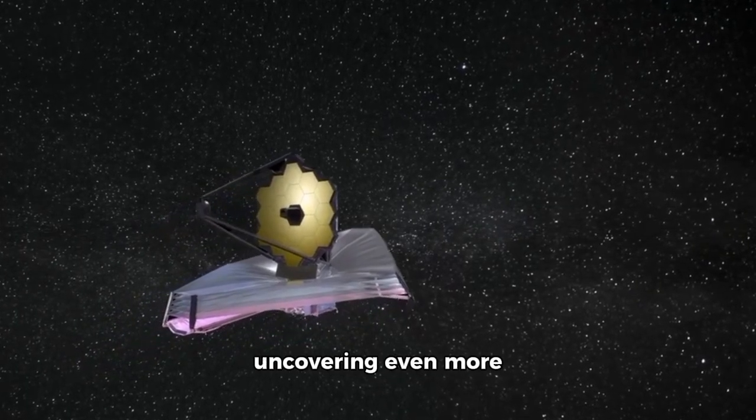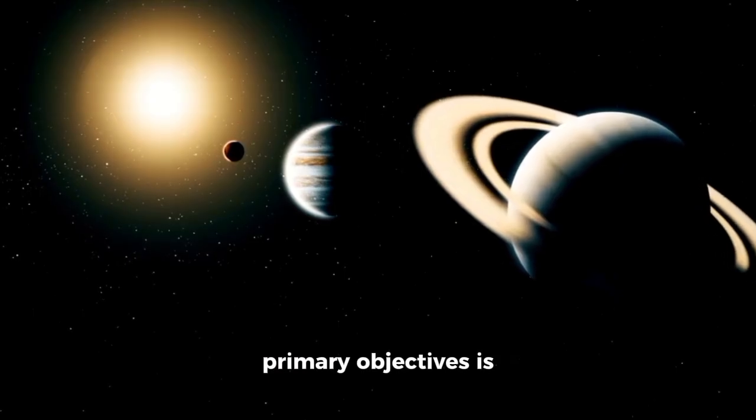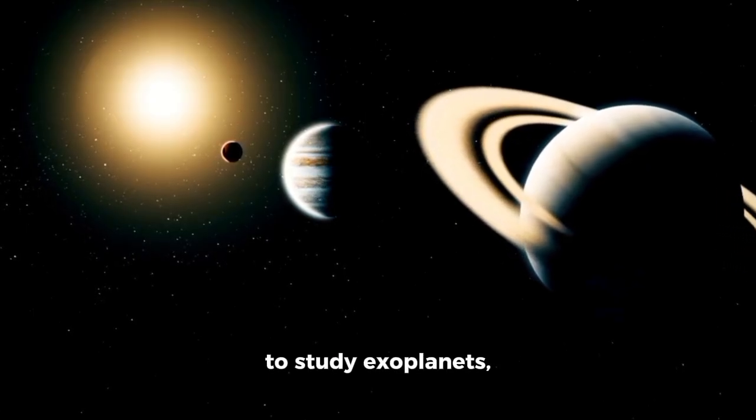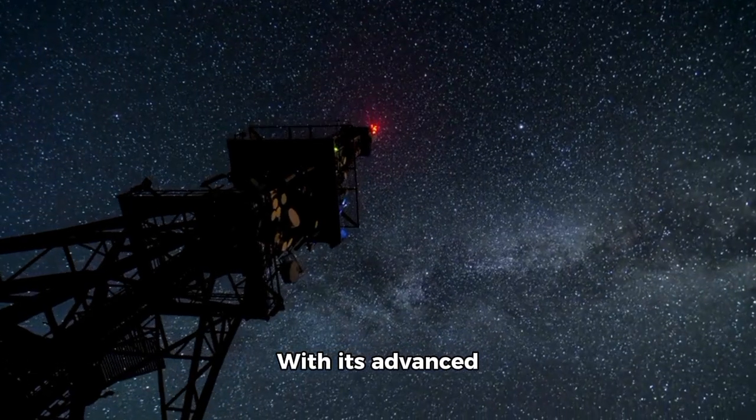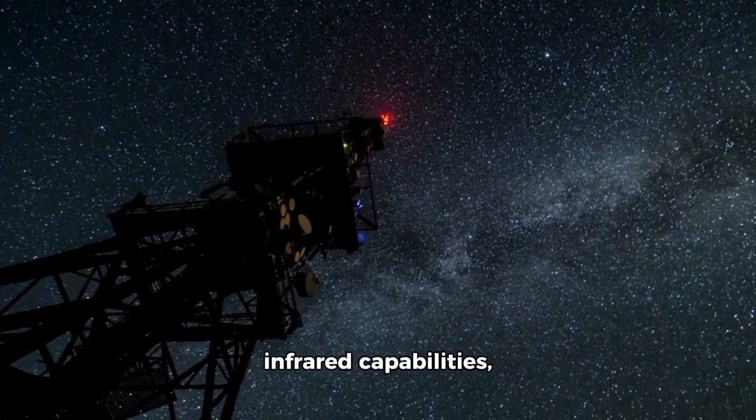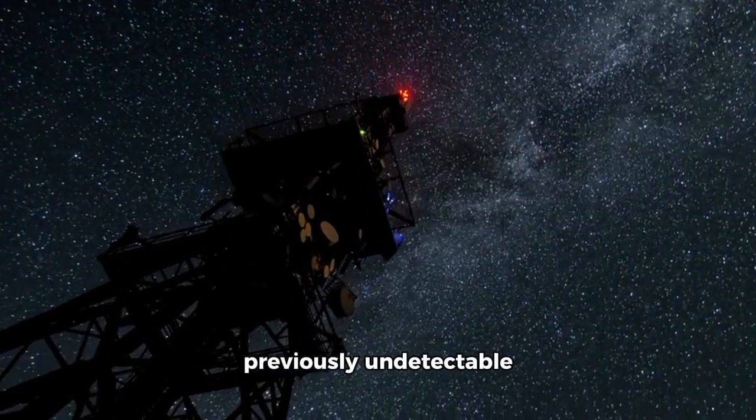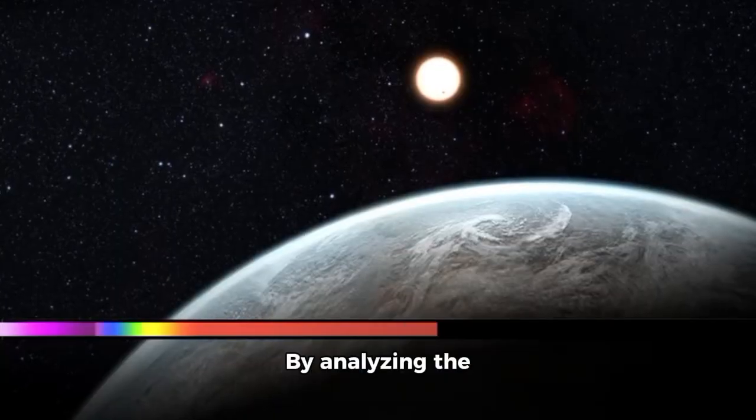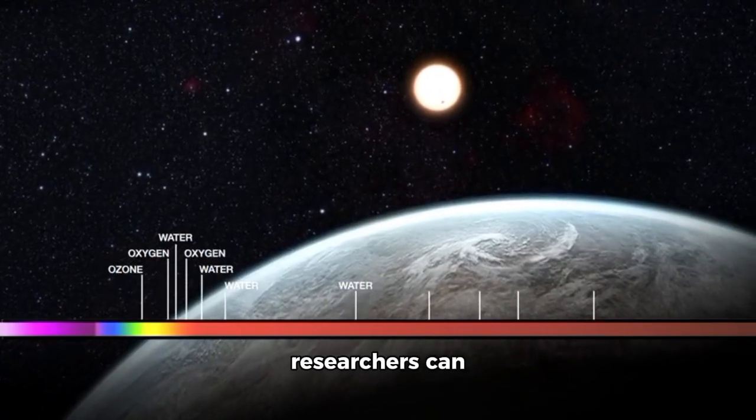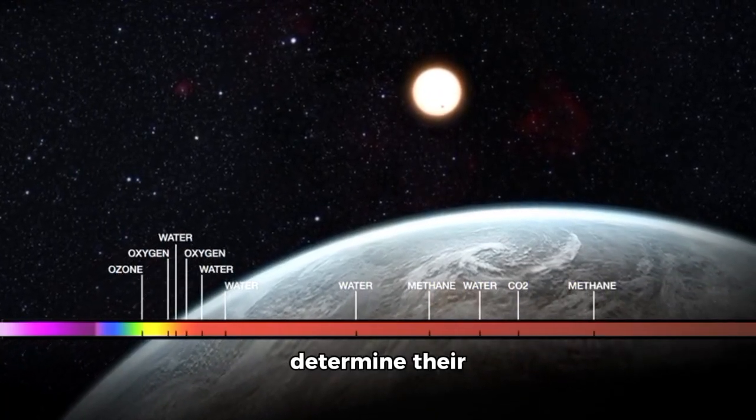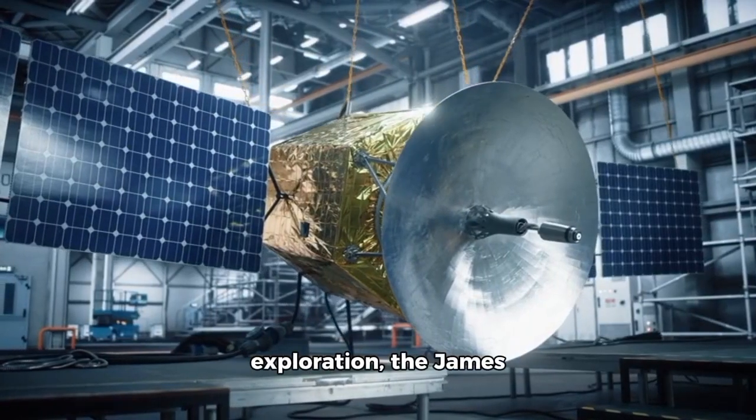As the James Webb Space Telescope continues to push the boundaries of space exploration, scientists are uncovering even more breathtaking insights. One of the telescope's primary objectives is to study exoplanets, or planets that orbit stars beyond our solar system. With its advanced infrared capabilities, the Webb is capable of identifying exoplanets previously undetectable by earlier telescopes. By analyzing the atmospheres of these distant worlds, researchers can determine their composition, weather patterns, and even look for indications of life.